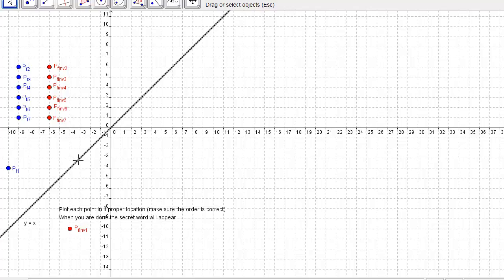You'll notice this is the line y equals x. I want you to think about how these points are related to each other relative to the line y equals x. You should see a secret word appear that is the answer to the question.